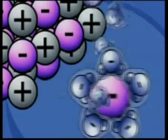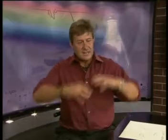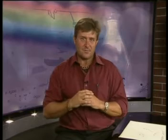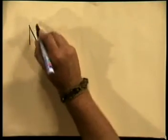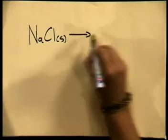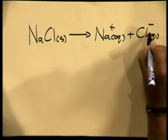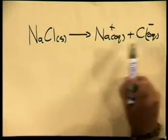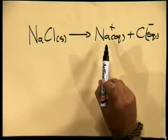The ions present in the solid are moving away from each other and spreading out in the water. The positive ions remain surrounded by the slightly negative ends of the water molecules, while the negative ions remain surrounded by the slightly positive ends of the water molecule. I am now going to write down the ionic equation to represent the dissociation of sodium chloride in water. The subscript S represents the solid phase of sodium chloride, while the subscript AQ stands for aqueous solution, meaning that water surrounds the ions in the solution.